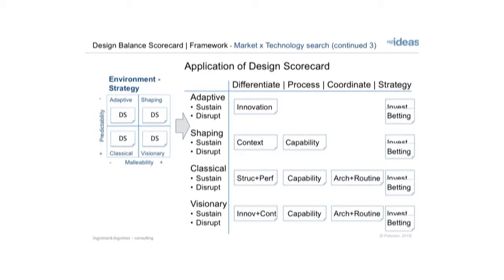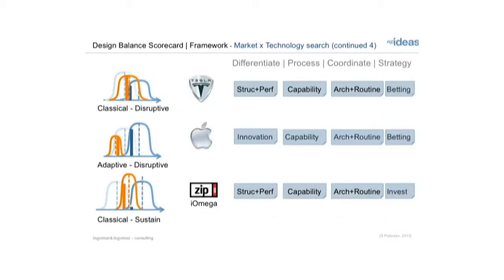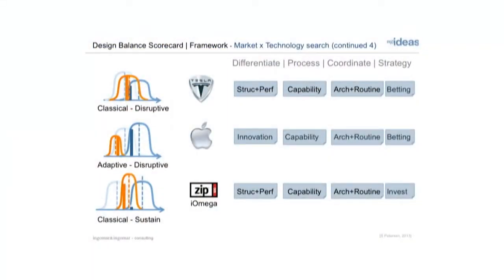Different strategies give you different combinations of elements. Be aware that at the strategy level, depending on where you are, you will either be in betting or investment mode. Tesla is one successful example — it came in with a classic disruptive technology, made electrical vehicles better because electrical was already out there. They had to differentiate, build process capabilities, and develop architecture routines, with the basic bet that people would buy a performance electrical vehicle. Apple's iPhone used an adaptive disruptive strategy — adaptive market using a disruptive approach — while Samsung would typically use a sustainable strategy.